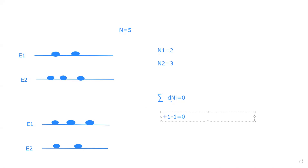If the number of particles in one state decreases, that means the number of particles will increase in another state. The number of particles cannot escape from the system; they must be inside the system. Changes in the internal state distribution may occur, but the total number of particles N is always equal to five. The summation of dni must be equal to zero — that is the conservation of number of particles.